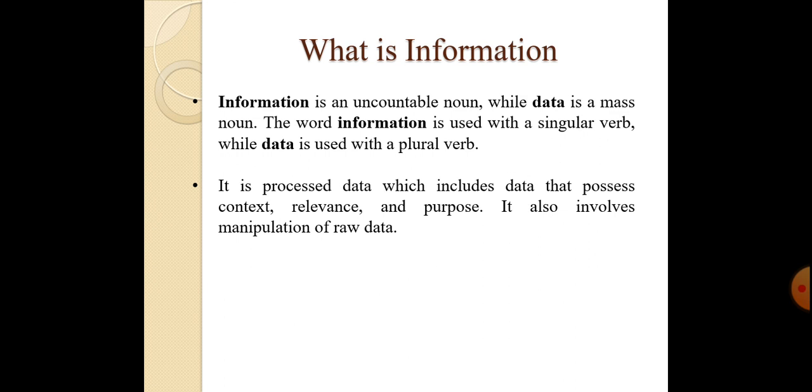The next concept is information. What is information? It is an uncountable noun while data is a mass noun. The word information is used with a singular verb while data is used with a plural verb. Data is unorganized manner and information is in structured or organized manner. It is processed data which includes data that possesses context, relevance and purpose. It also involves manipulation of raw data.